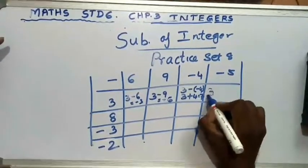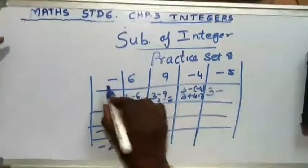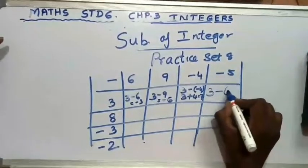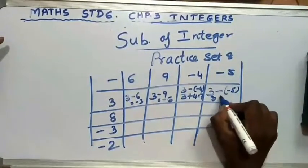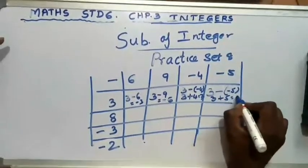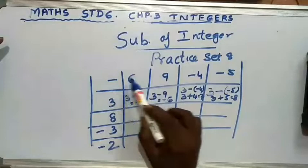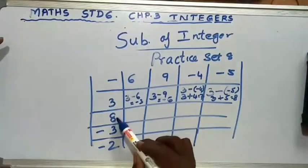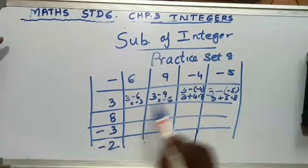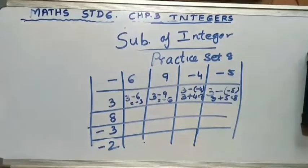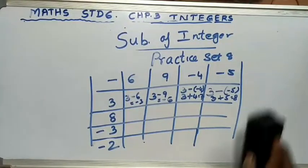Next: 3 minus (minus 5). I write the minus in a bracket as minus 5. Minus into minus is plus, so 3 plus 5 is 8. In this way you have to solve the remaining sums: 8 minus 6, 8 minus 9, 8 minus (minus 4), 8 minus (minus 5). Solve the practice set 8 in this way.